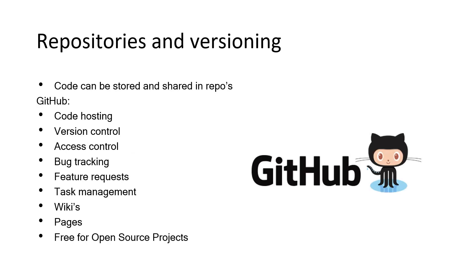At some point your scripts will be more complex and you might work in teams on the same code. In that case, you need to store your code centrally in a repository and take care of version management. The most popular system for that is GitHub. In GitHub you can store code, take care of version control, have access control, track bugs, handle feature requests, manage tasks, add a wiki page, or add web pages about the tool. Until now it has been free for open source projects, but check the current terms of GitHub for up-to-date information.